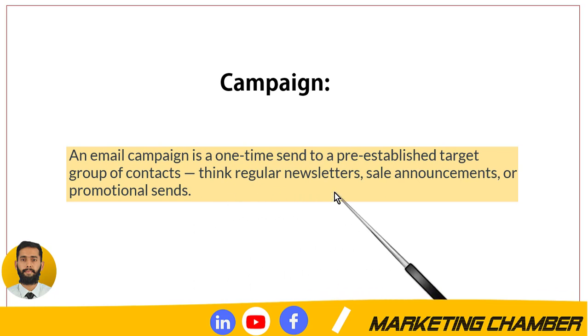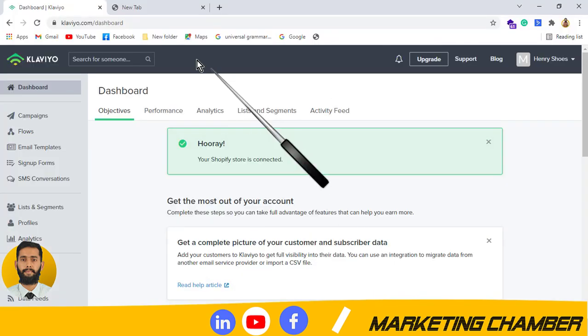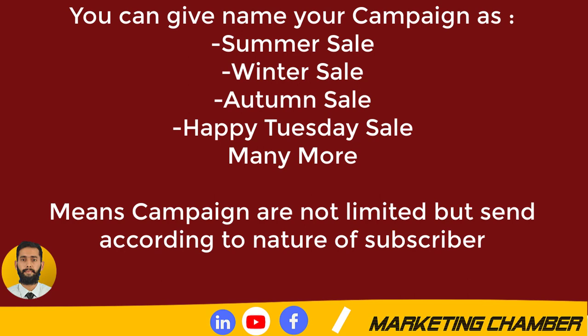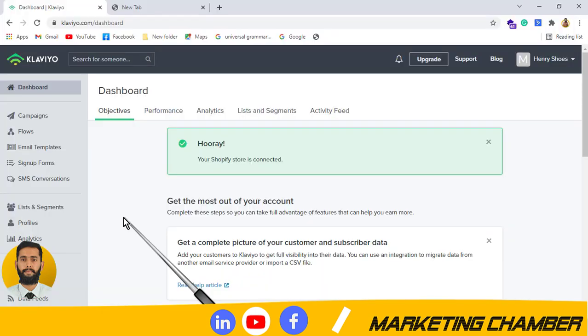All these things fall in the category of campaign that you send from time to time. Now, how many types of campaigns are there? They are not restricted to any number. For example, if you are offering a discount in summer season you can call it a summer sale, or you can send a campaign on Friday saying 'Happy Friday Sale.' You can give your campaign any name just to convince your subscribers to come to your store. The only goal is to sell your product.